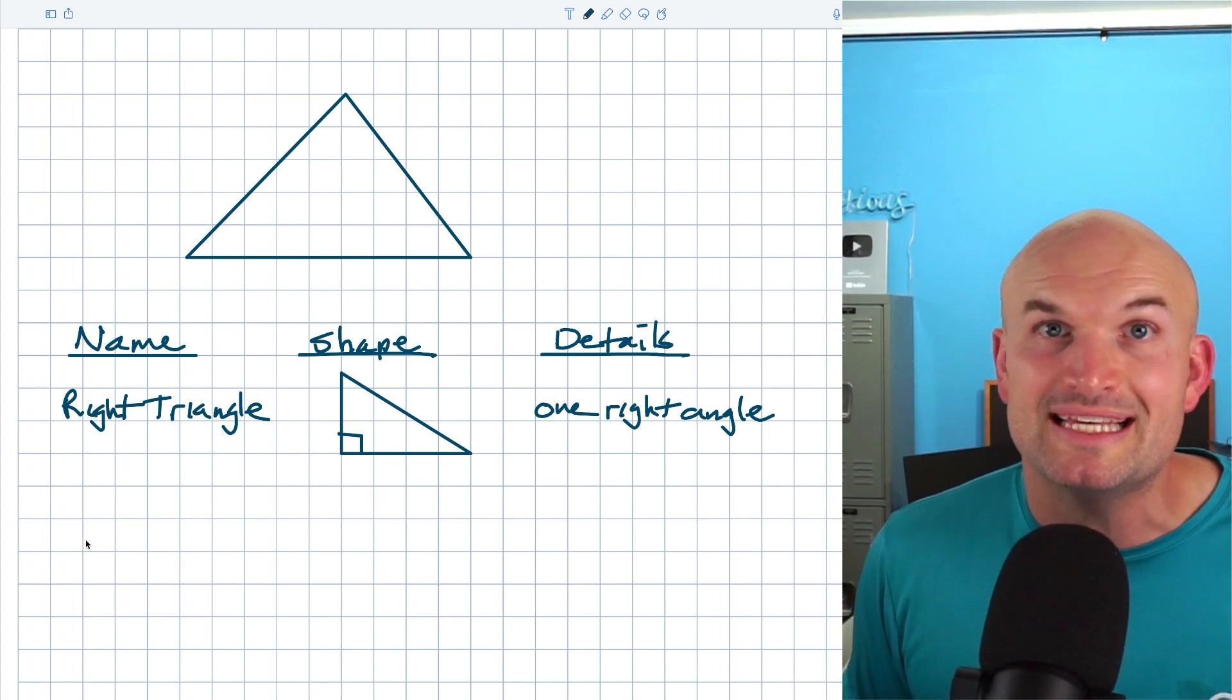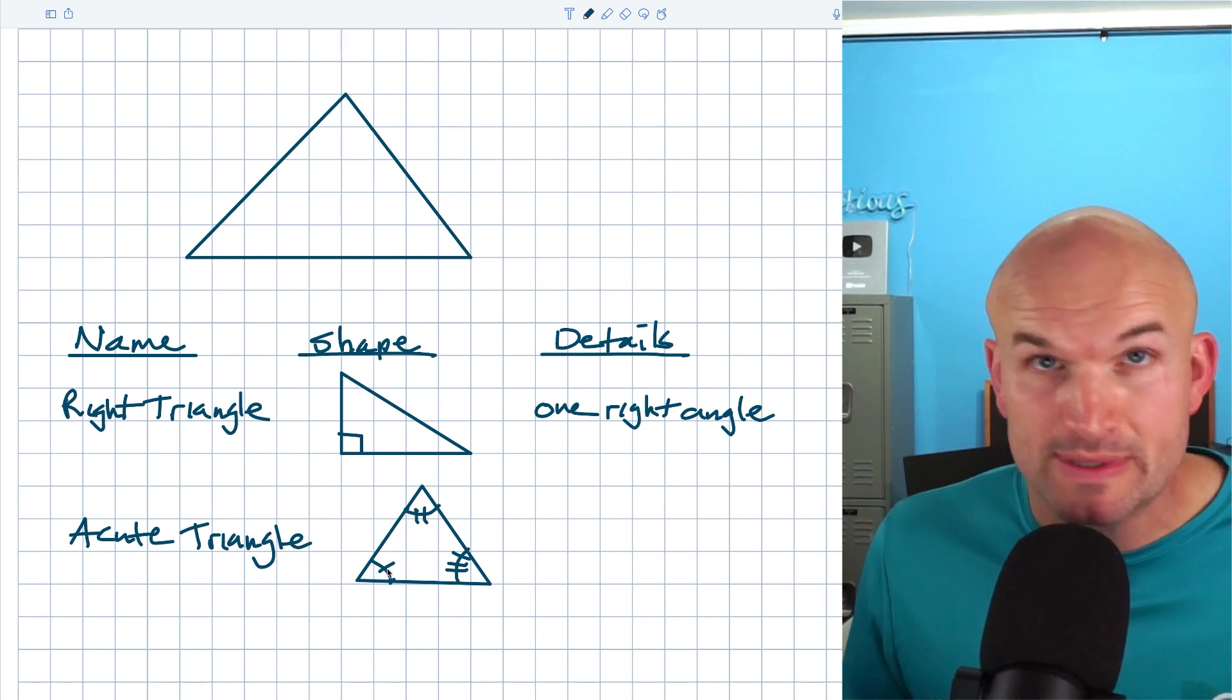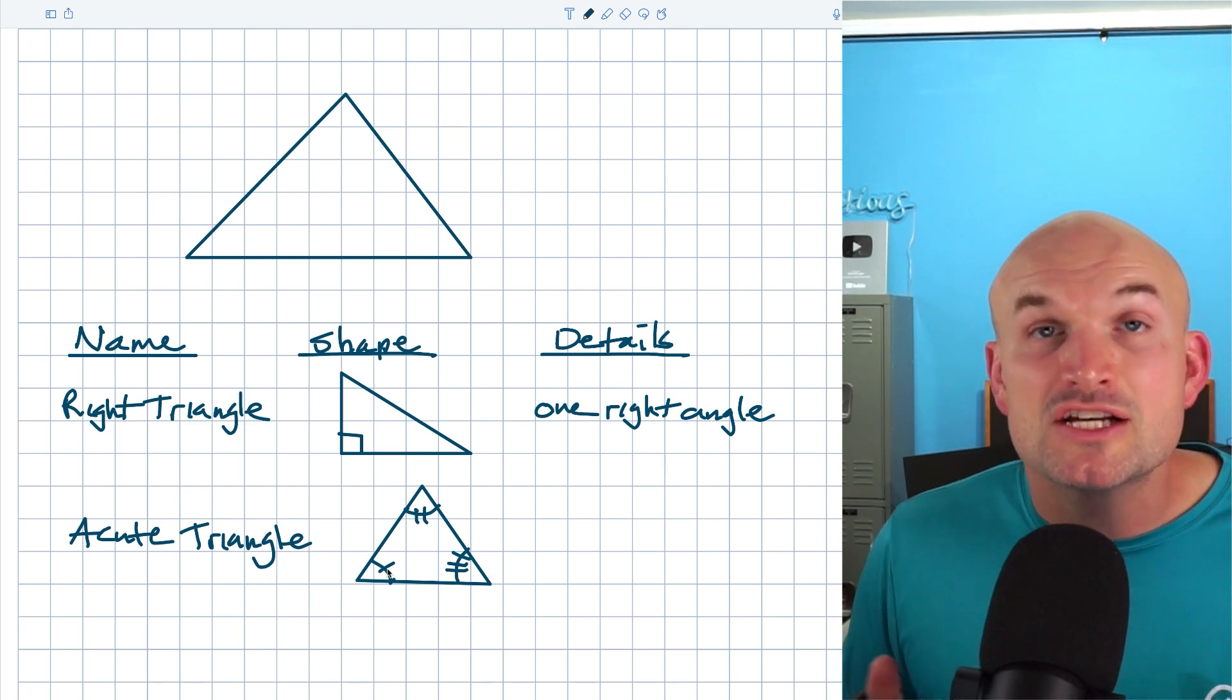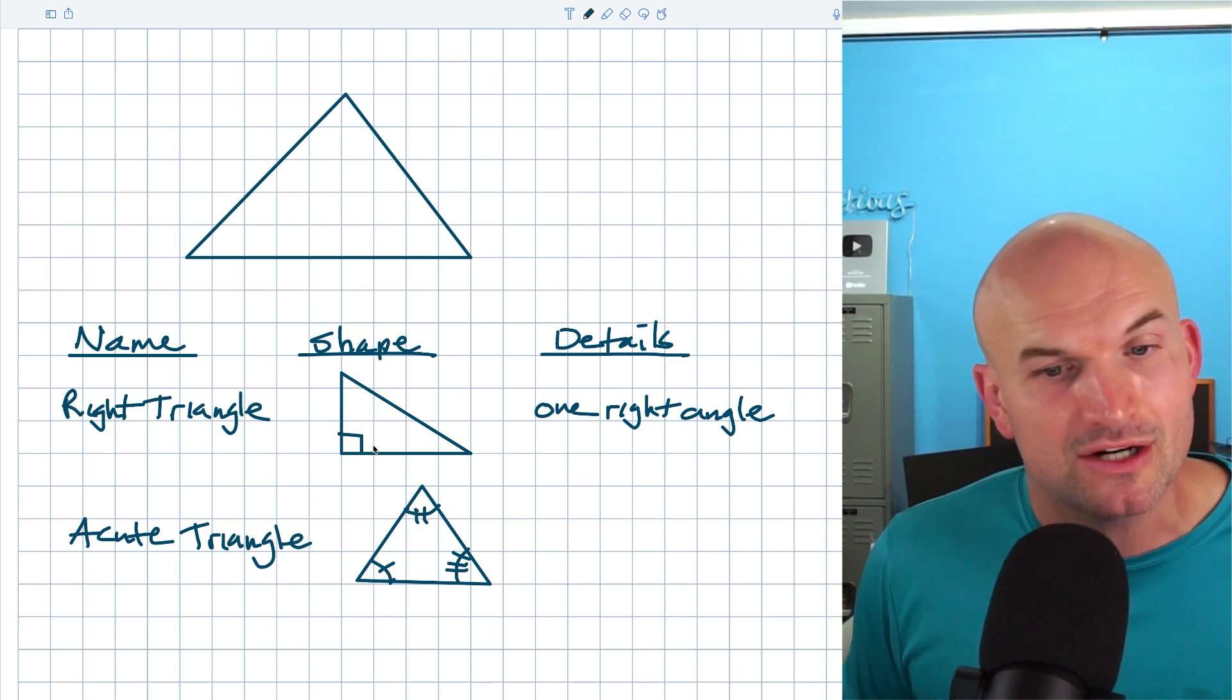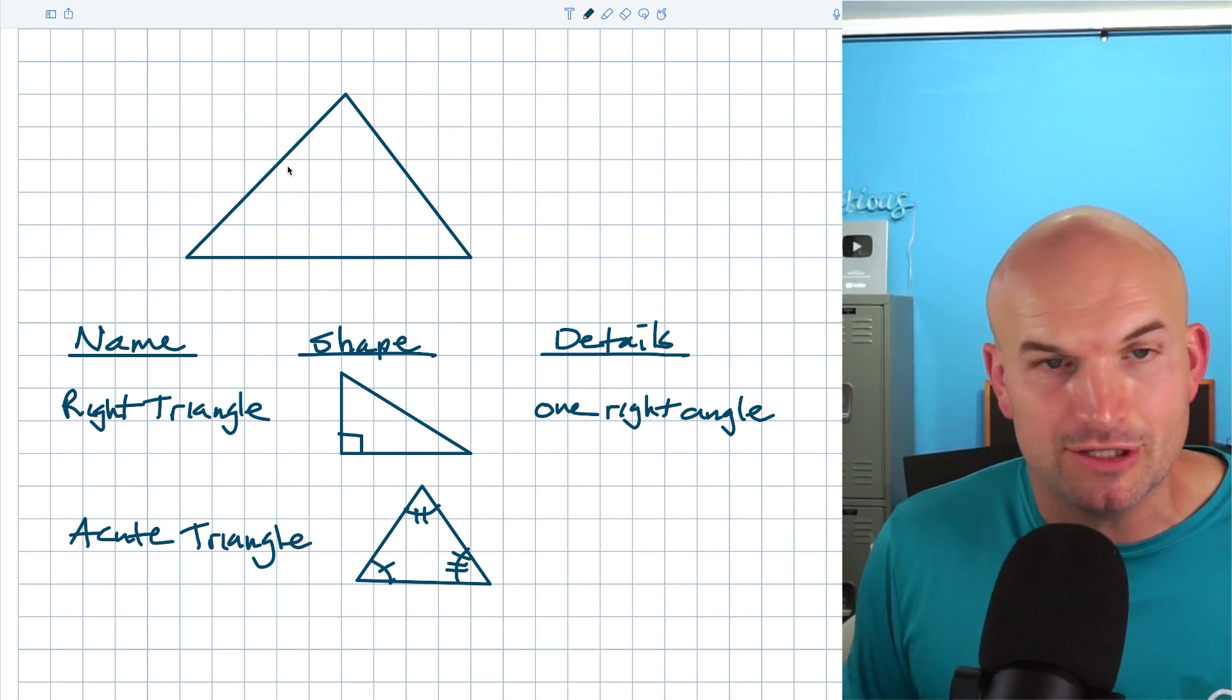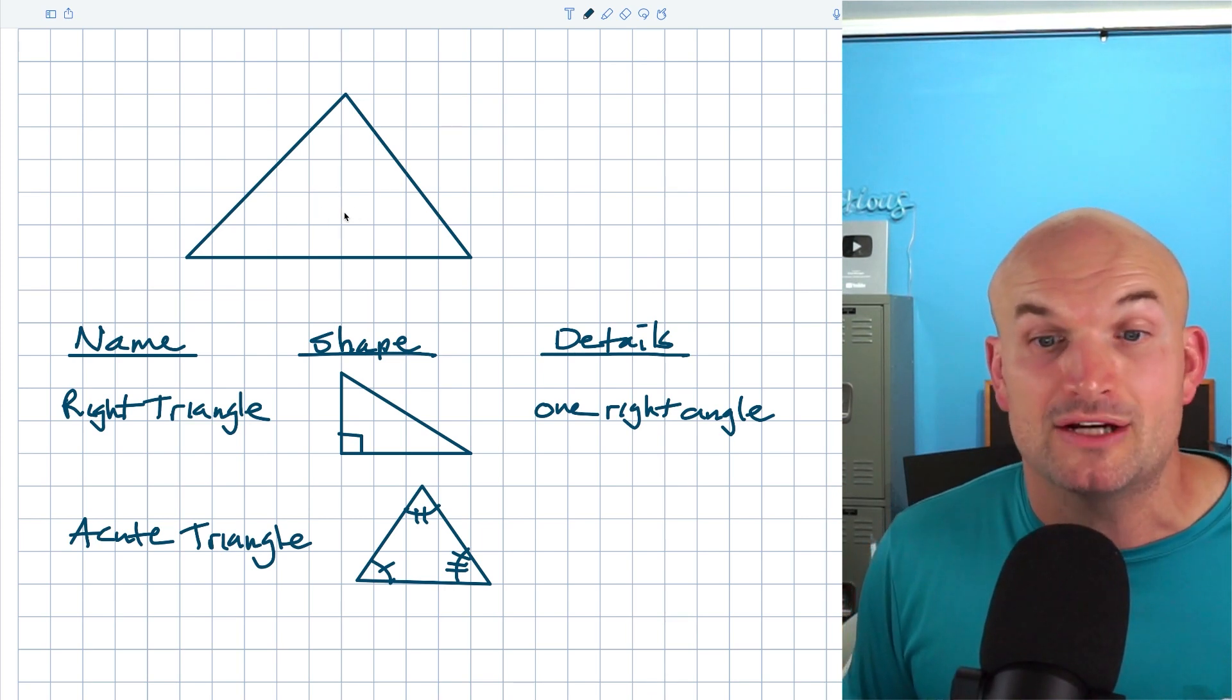Moving on to the next triangle is going to be the acute triangle. Now, the acute triangle basically just has three acute angles. We don't know what the measure are. We don't know if any of them are equal to any of it. They just have to be smaller than 90 degrees, right? Because remember, 90 degrees we represent as the right angle. These are all going to be smaller. Now, I don't know the measure of these angles, but I think you could probably agree that these are all going to be less than 90 degrees. So this, we could classify this as an acute angle.